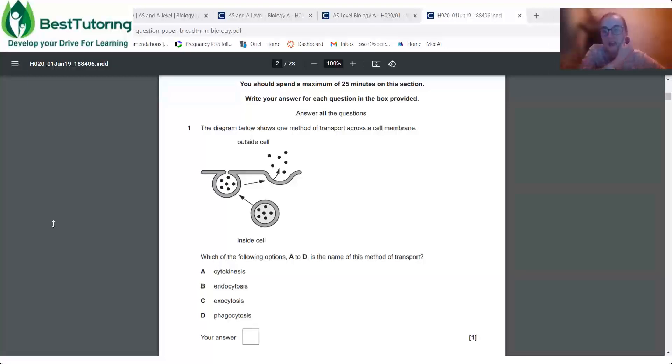So endocytosis, so that is transport across the cell membrane. Well, that's entering, isn't it? Remember? Exo, exiting. Endo, entering. So it's the mass movement, isn't it? Exo and endocytosis, okay? Exo is outside of the cell.